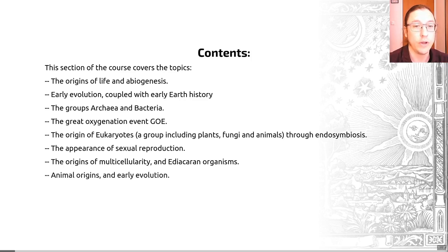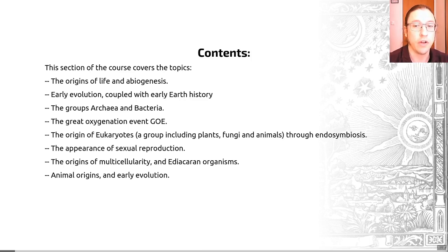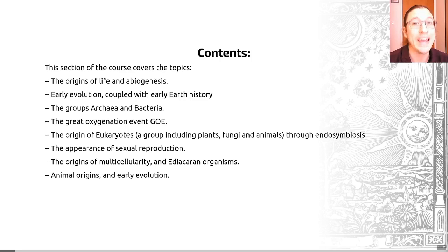Those are the Ediacaran fauna, and then we'll look at animal origins and the early evolution of animals. I think it's really important for all of these topics to discuss why this matters — these are some really big, key questions about the history of life on Earth. These events are responsible for shaping pretty much all of life that we see today, and understanding them is key to understanding life around us today but also evolution as a whole, i.e. how life has evolved over the last 3,500 million plus years.